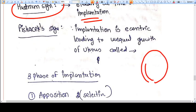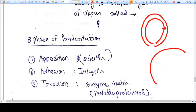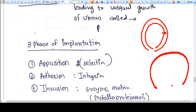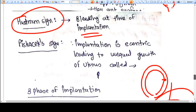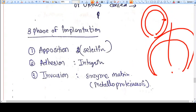This asymmetrical growth of the uterus is called Pikacis sign. There are three phases of implantation at the molecular level. Firstly, apposition - when the blastocyst comes in contact with the endometrium. Selectins are the molecules involved in this process.